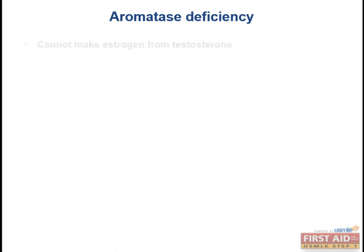A simple definition you need to be aware of for step one is aromatase deficiency. Aromatase is what converts testosterone to estrogen, and it's produced predominantly by the Sertoli cells in the testes. So without aromatase, we're going to have an increase in testosterone and a decrease in estrogen.